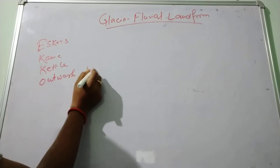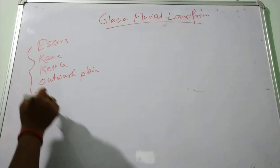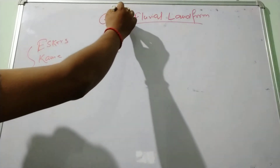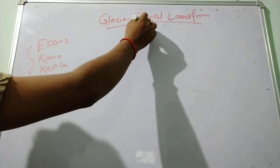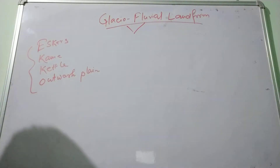These are the most important landforms found in the glacial deterioration, caused due to the glacial-fluvial activity in the glacial deterioration.